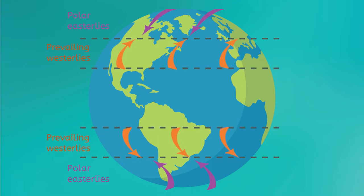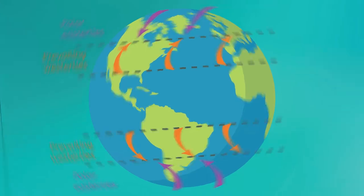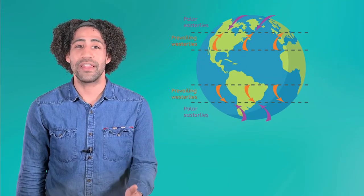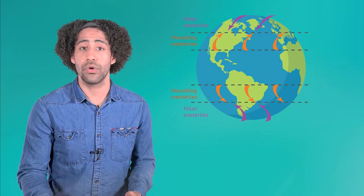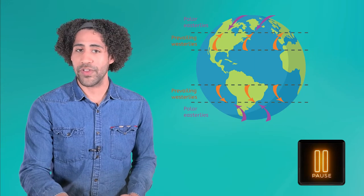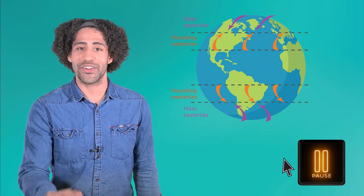The next group of winds originates from the sections of the planet just past the cold polar regions. These winds are called the prevailing westerlies, because they blow from the West. How do you think the prevailing westerlies interact with the polar easterlies? Pause the video here and record your answer in your guided notes.